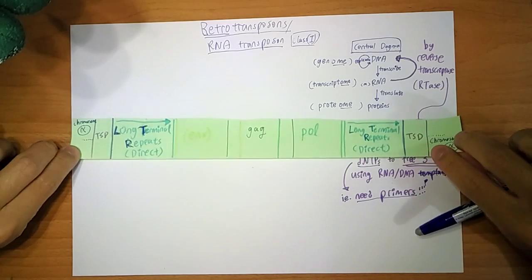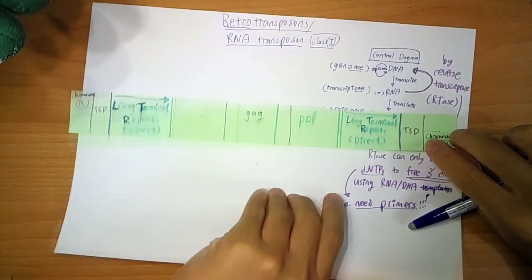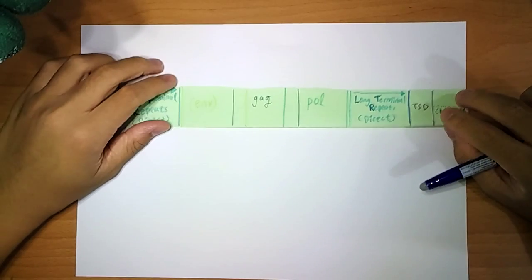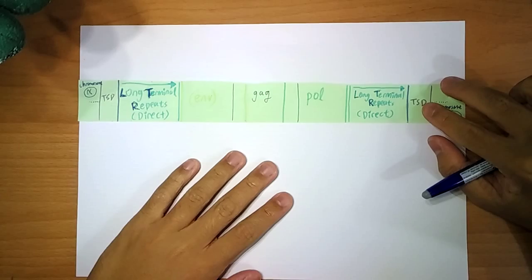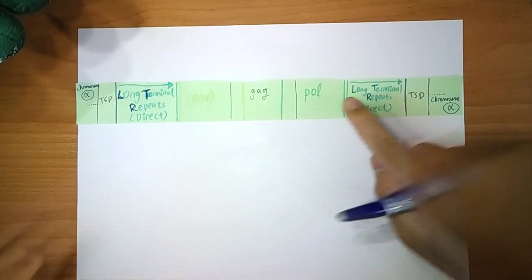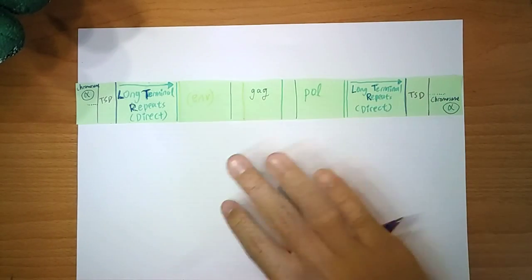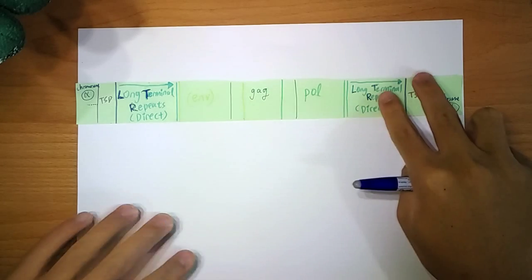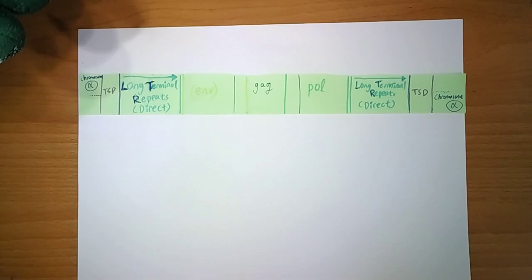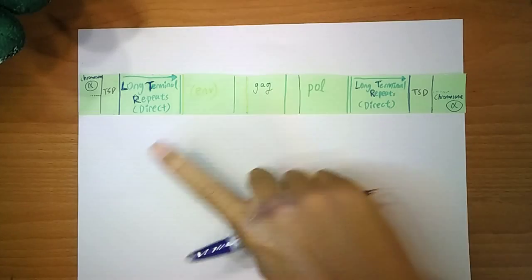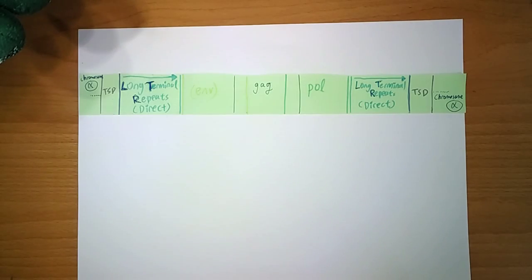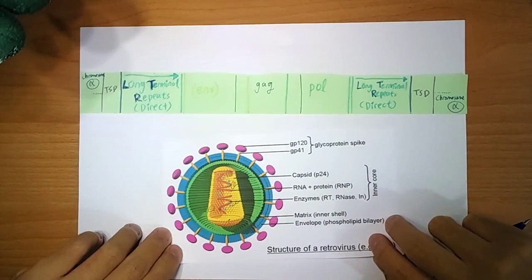So, this is how RNA transposome looks like. I'll use the next page. So, this is how it looks like. And, these genes here, don't worry about it too much. These are labeled this way, because this whole thing is pretty similar to your HIV virus,